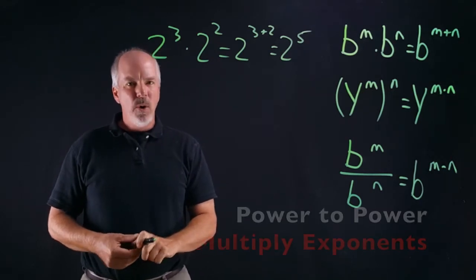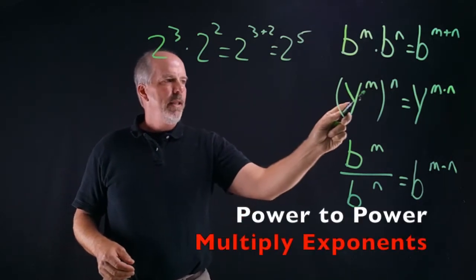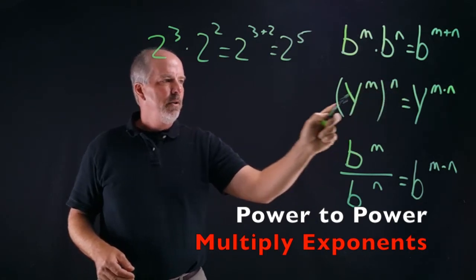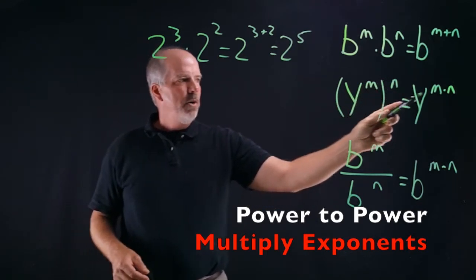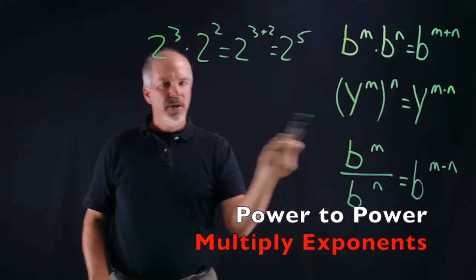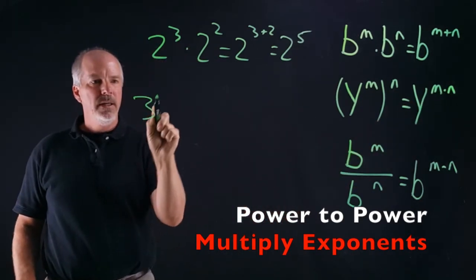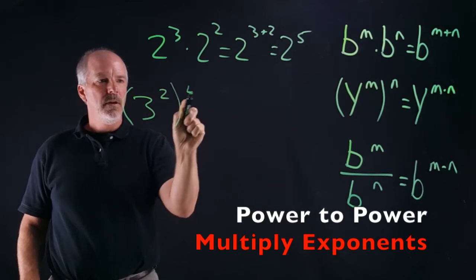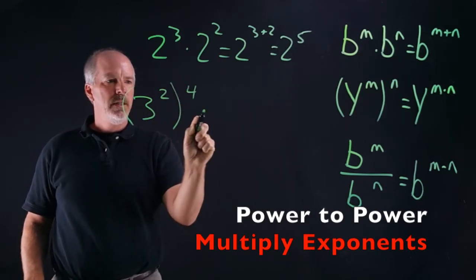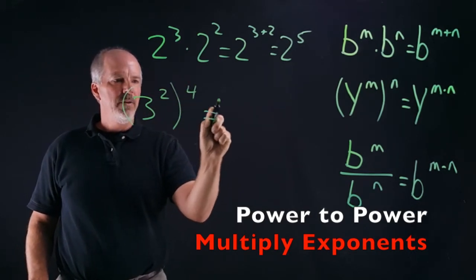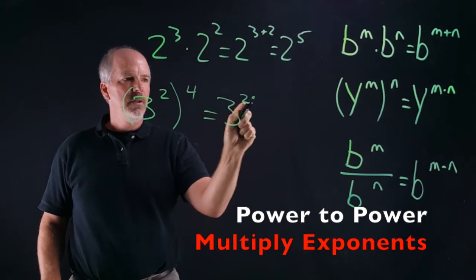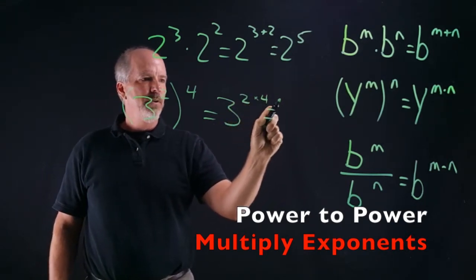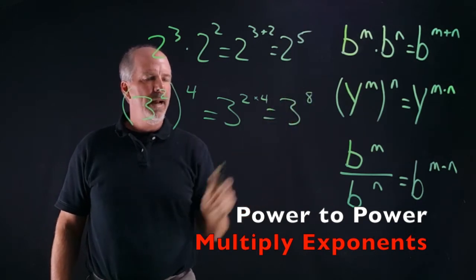The next one we have is power to a power: y to the m in parentheses to the nth power. When you have this situation, you multiply the exponents. So if we have three to the second in parentheses to the fourth power, that's going to equal three to the two times four, which equals three to the eighth power.